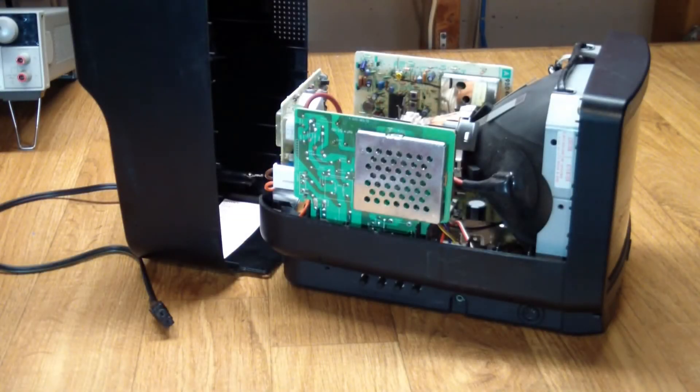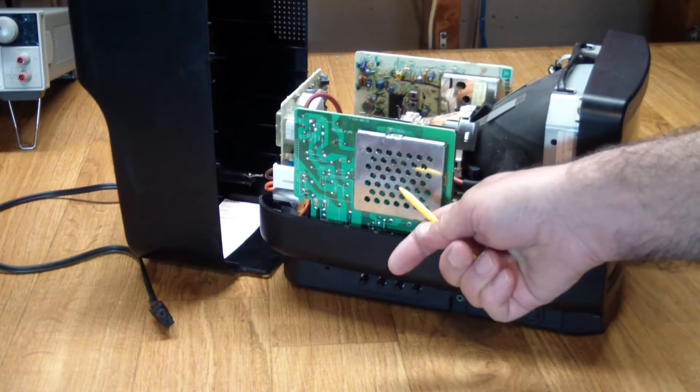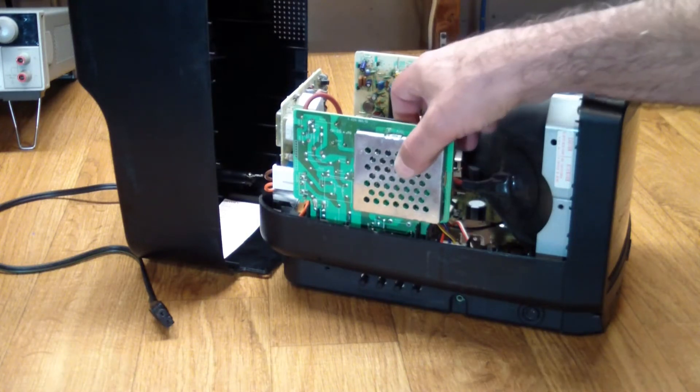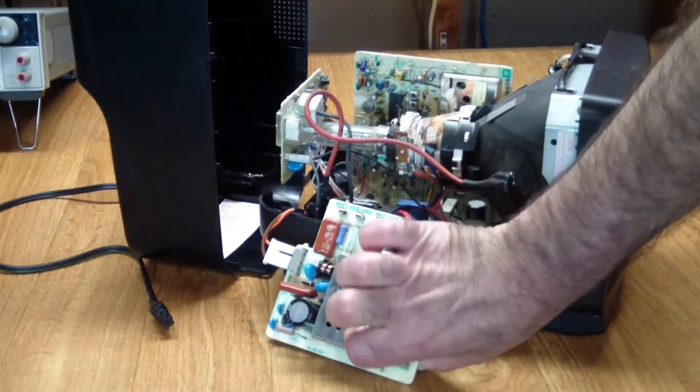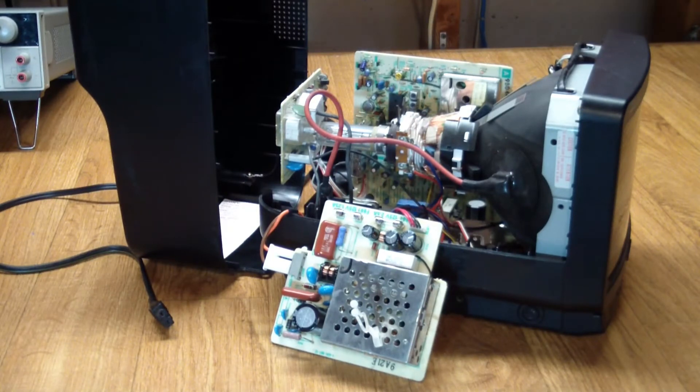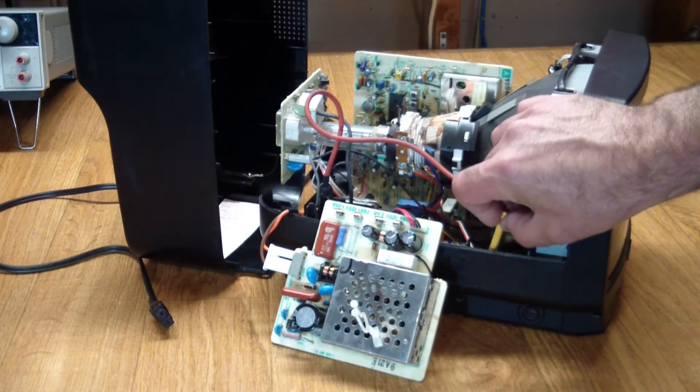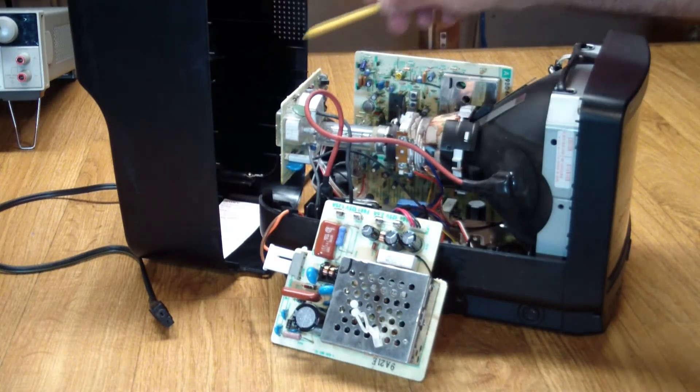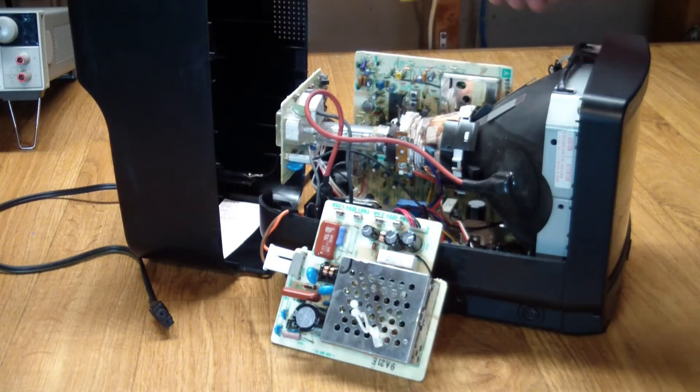I took apart the TV. It was very easy - two screws in the back and the top of the case lifted off. Here is what we see inside. Right in front is the AC power supply and it comes out sitting in a slot. It comes out pretty easily. The rest of the TV is the main CRT controller board or chassis as it's also called, CRT itself, the neck board and the TV tuner.